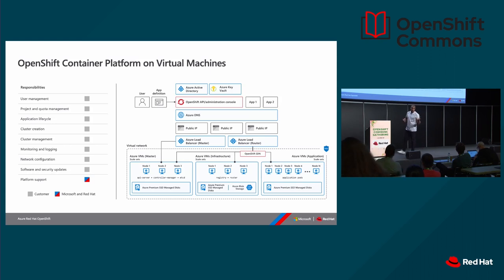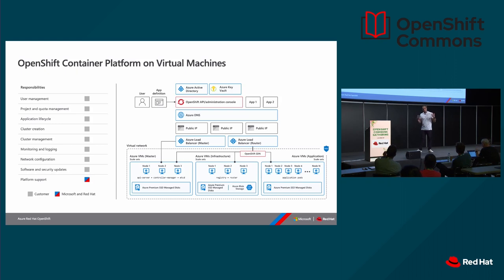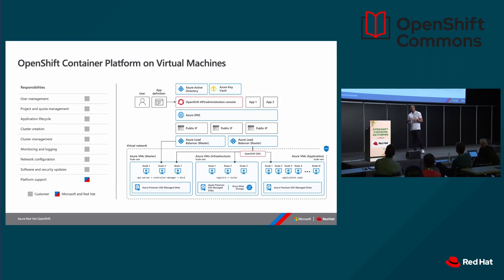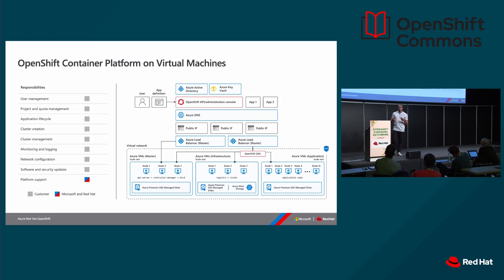You're going to have an identity provider — Azure Active Directory in this instance or any other identity provider — and a key vault so you can register your secrets and certificates and bring them into your applications. If you install this in Azure, the whole infrastructure management piece belongs to you, so you're going to operate the whole thing. On top of that, you do the onboarding for your developer workflows. The only managed piece in that scenario is the ability to open a support ticket with Microsoft or Red Hat. But that comes with the operational burden of still having to operate the underlying infrastructure.